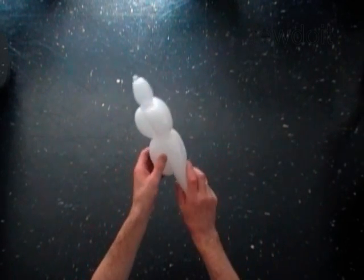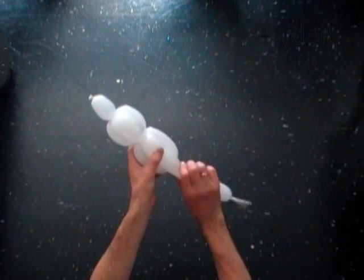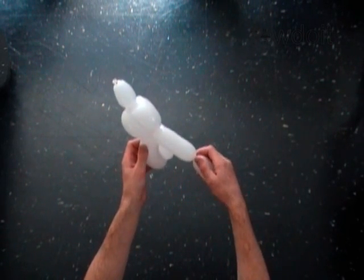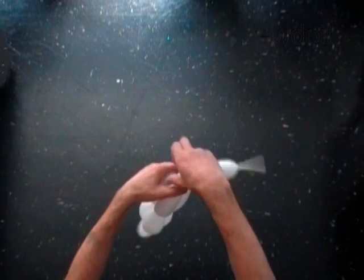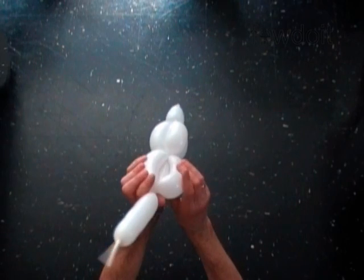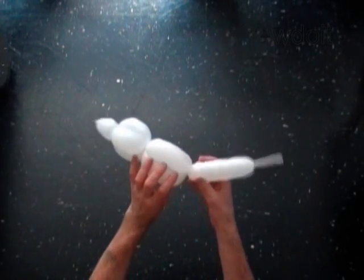Twist the seventh 4 inch bubble. Lock the free end of the seventh bubble between the sixth and fifth bubbles. Once again you have to roll the fifth and sixth bubbles around the seventh bubble.